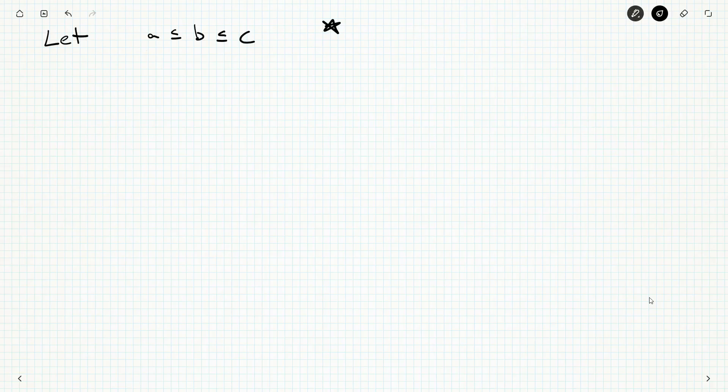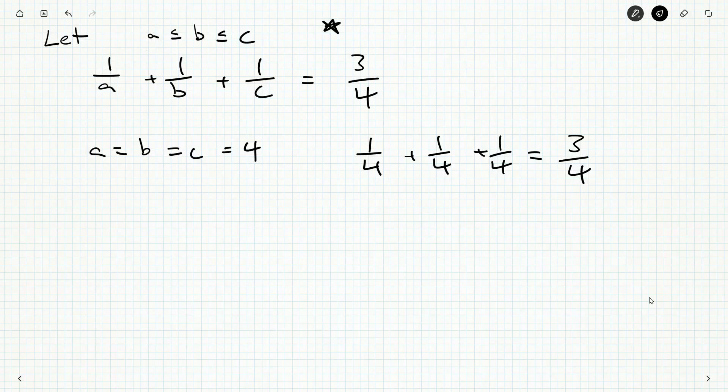One other thing I'm noticing right off the bat, 1 over A, 1 over B, we have three fractions, add them up to 3 fourths. If A and B and C are all equal to 4, I get a solution. It's a fine observation, but it's not how you want to start making a list of possible solutions. The way to make a list and to notice patterns is to be very methodical, very organized, very algorithmic.